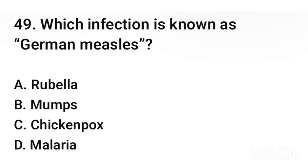Question number 49. Which infection is known as German measles? The correct answer is option A: rubella.